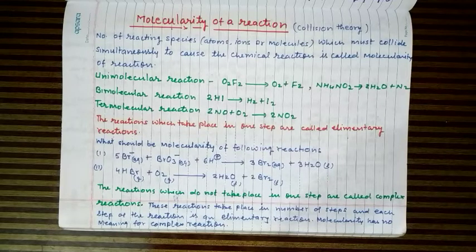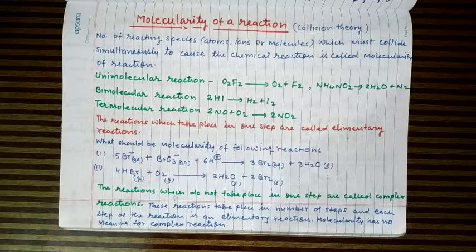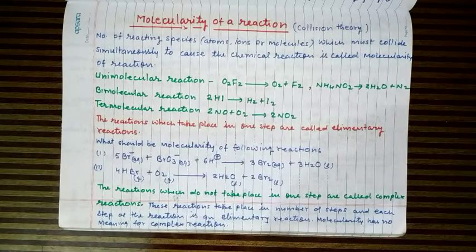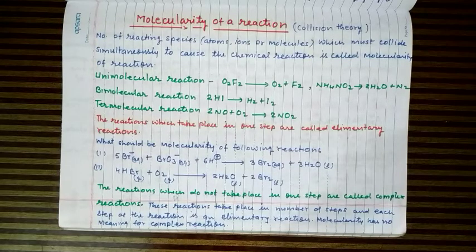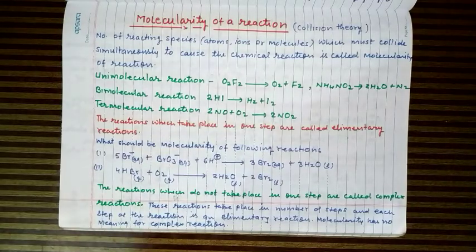We have seen that the number of molecules of the reacting species appearing in the balanced chemical equation cannot be used to predict the order of reaction. It means that all the reactant molecules are not involved in the rate-determining step, or all the reactant molecules are not colliding simultaneously to cause the reaction. This indirectly indicates that the reaction takes place in a number of steps.